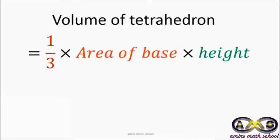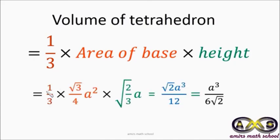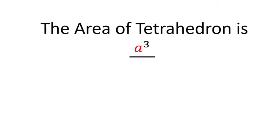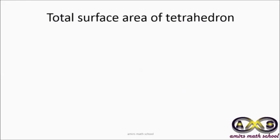With the slant height and height known, we can find the volume of the tetrahedron. Since a tetrahedron is a special type of pyramid, the volume formula is: V = (1/3) × base area × height. The base is an equilateral triangle with area (√3/4) · a², and the height is √(2/3) · a. After calculating, the volume of the tetrahedron is a³ / (6√2), where a is the edge length.